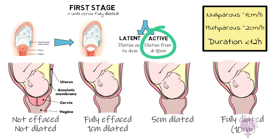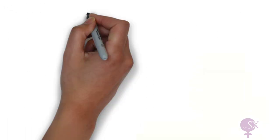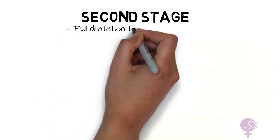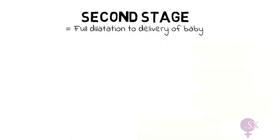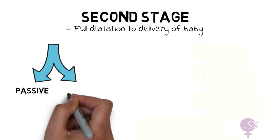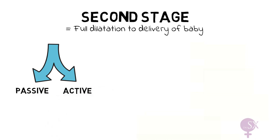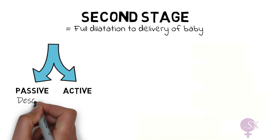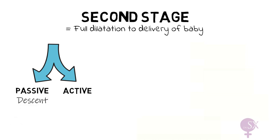During the first stage of labor the membranes will rupture unless they haven't already. Next, the second stage refers to the period from full dilatation of the cervix until the baby is delivered. This is also divided into two stages: the passive stage, where we allow for descent of the fetal head until it reaches the pelvic floor and the woman experiences the desire to push, and the active stage, when the mother is actively pushing.